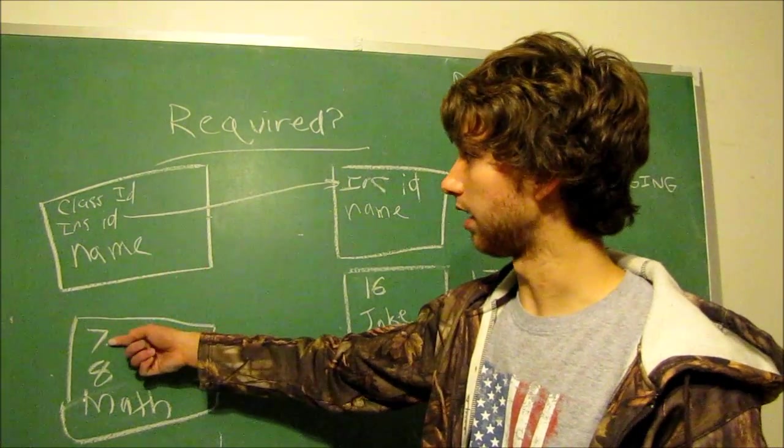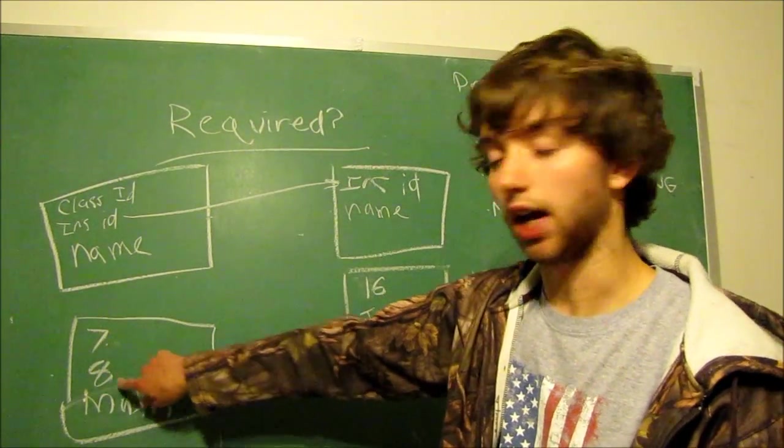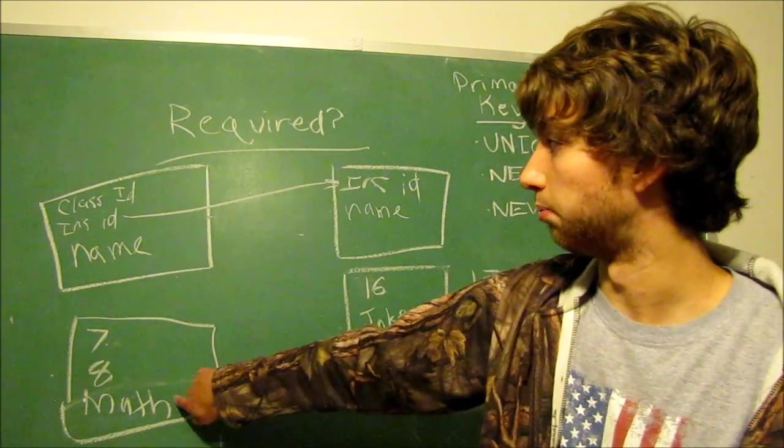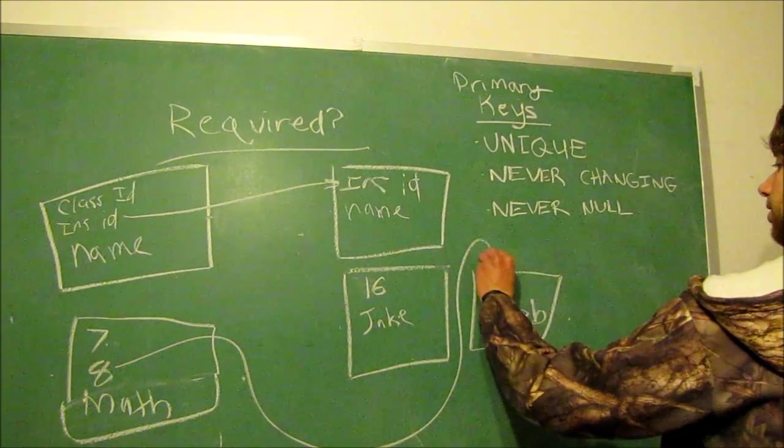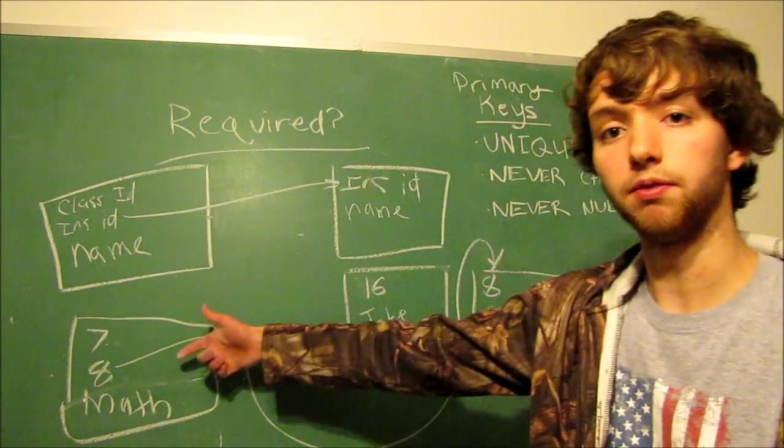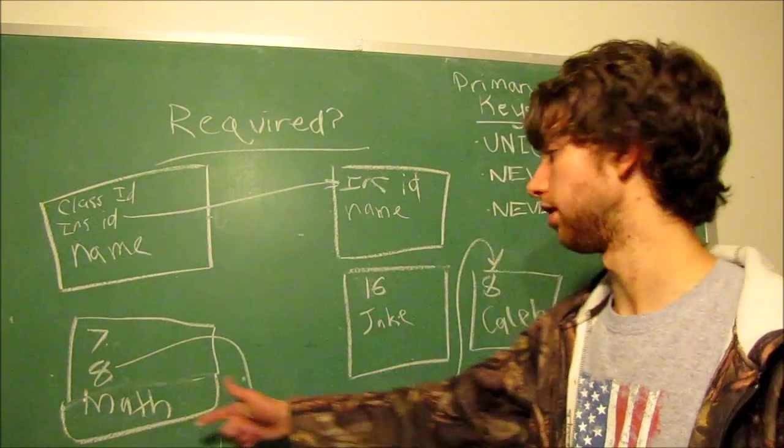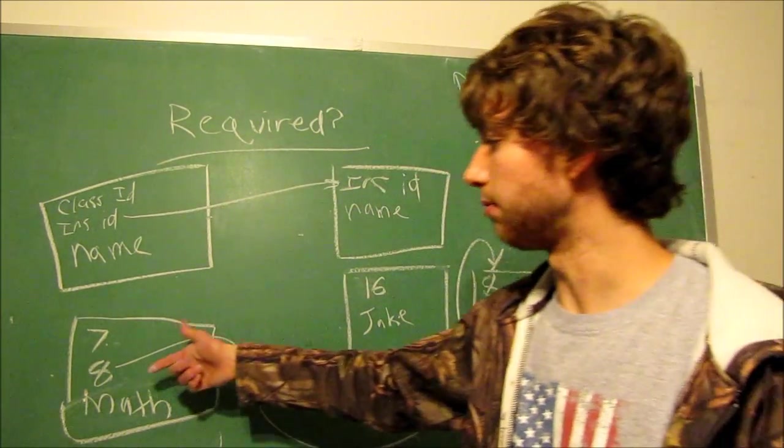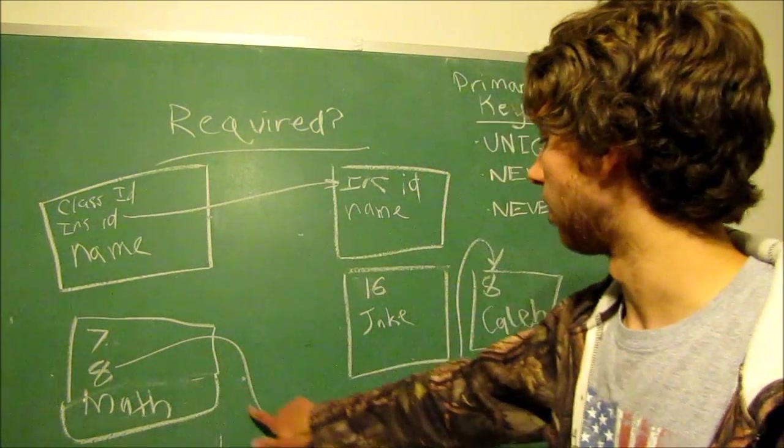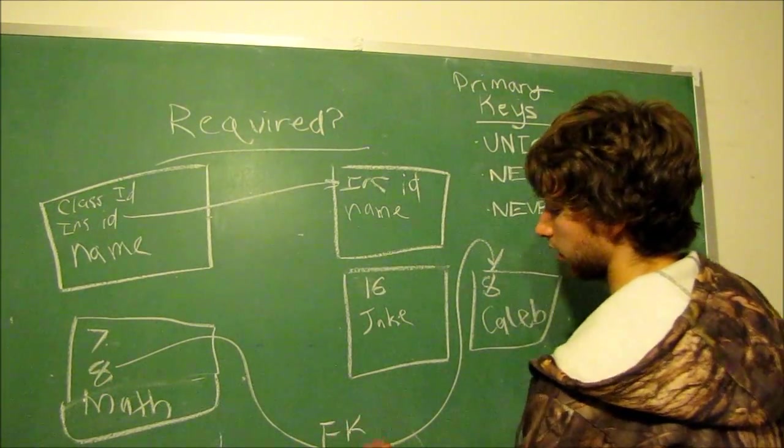So now we have an instance of a class. We got the class ID 7, the instructor ID 8, and the name math. So the instructor ID points to this instructor over here. This is the parent. This is the child, because this is a foreign key reference to the parent. So that means this relationship is a foreign key.